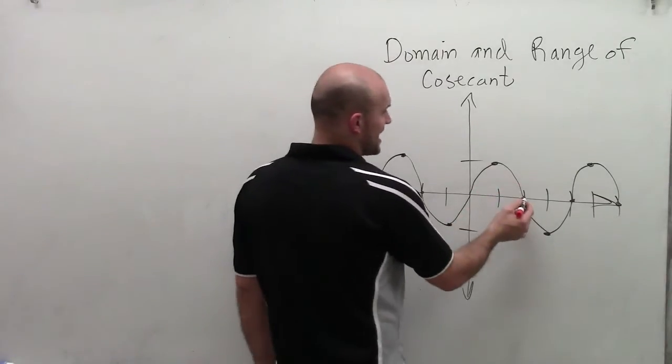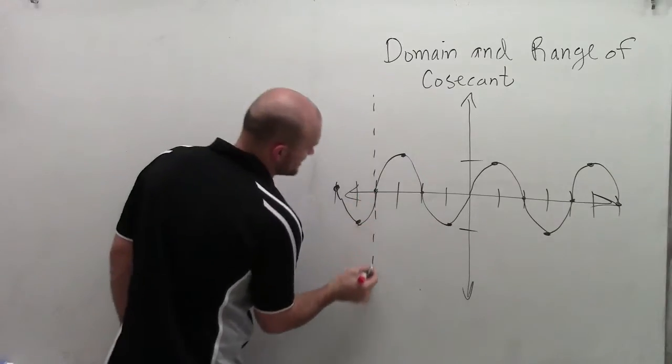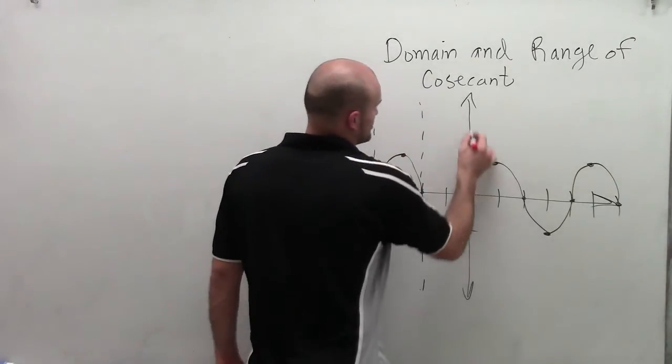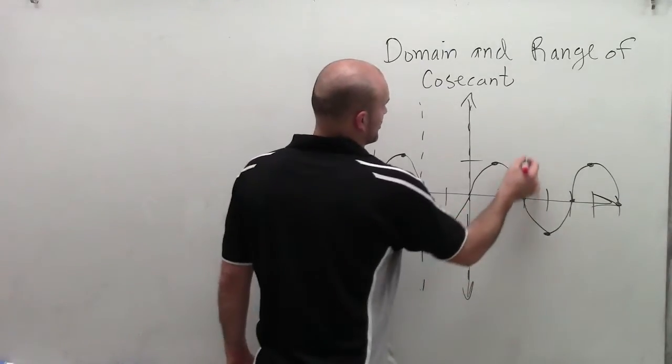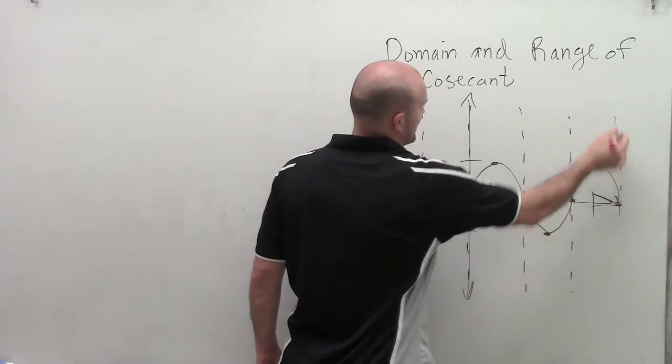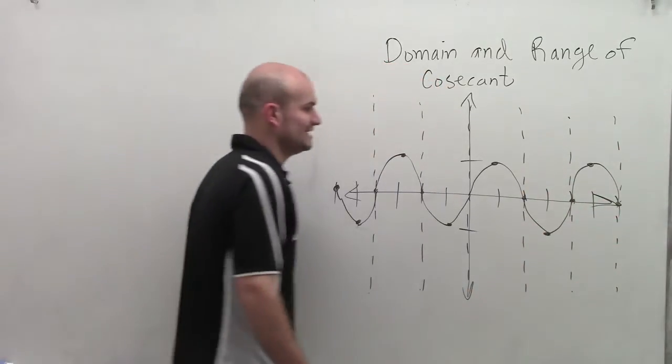Because remember, at each intercept of the sine function, that is not evaluated for our cosecant function. So at each intercept of the sine function, we create a vertical asymptote because our cosecant function cannot be evaluated at each one of those points.